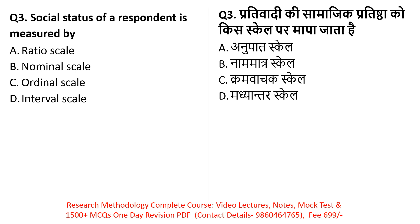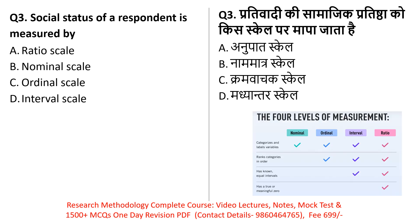Next question: 'Social status of respondent is measured by which scale?' Remember there are 4 types of scale of measurement. In short form, we call them NOIR: N for Nominal, O for Ordinal, I for Interval, and R for Ratio.